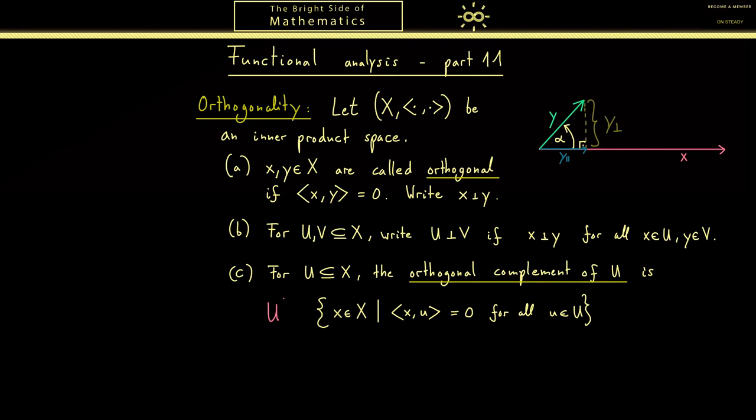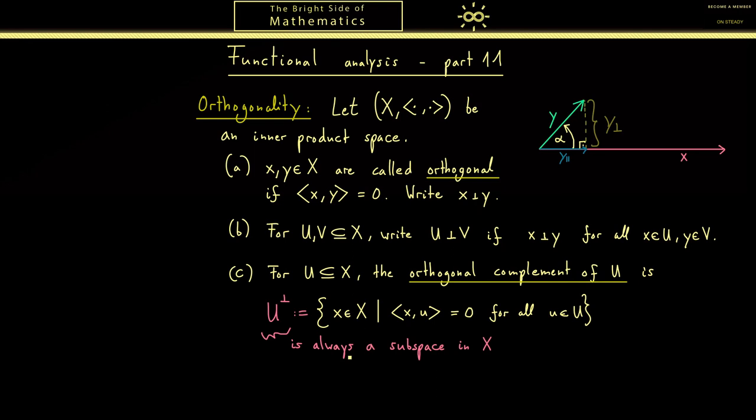A good thing you can now check for yourself is that this one is always a subspace in X. Let me point out you don't need U to be a subspace. U is just a set but U perp is always a subspace. So please try to prove that with your linear algebra knowledge.